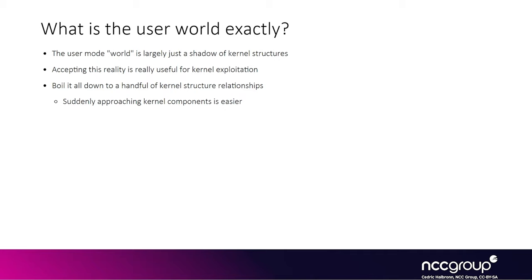When you call certain APIs, you are just pulling information out from those structures and getting it in userland. When you're trying to understand what the kernel is doing, it's helpful to understand some of these structures. Just understanding some of them is actually useful to get a very good view of what the kernel is. You don't need to understand all the relationships between all structures — just approaching certain ones is good enough.